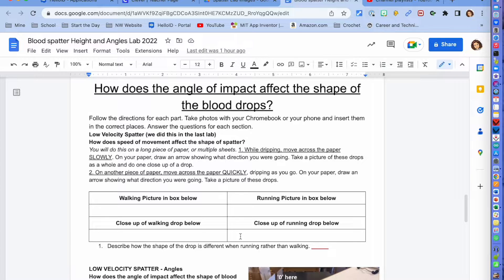So on your paper you should definitely mark whether it was walking or running and in which direction you were going because that will show you where your drops, you'll be able to see oh that's what that looks like when that drop is moving. So describing then you would describe what those drops look like.